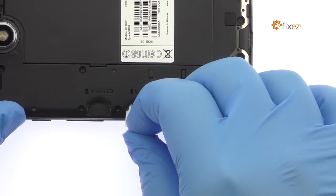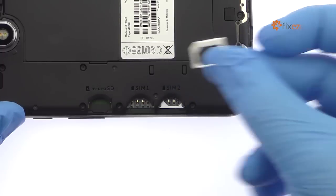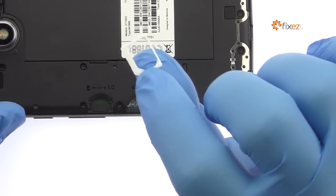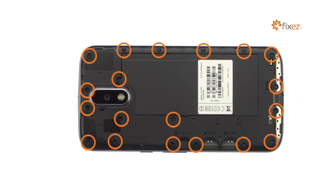Remove both nano SIM card trays. Remove the following 19 T4 Torx screws.